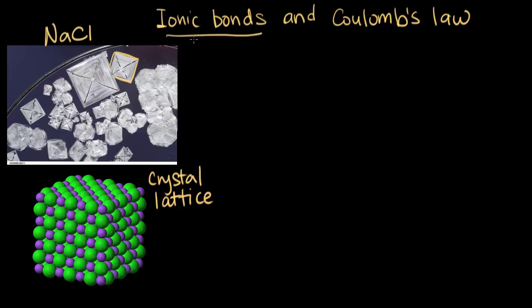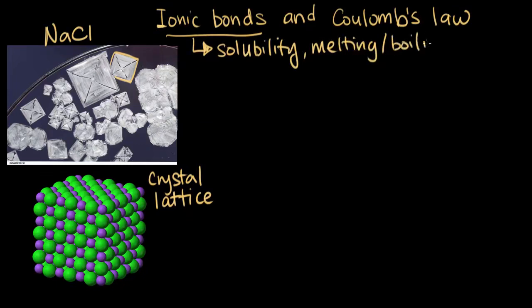These ionic bonds and how the ions are arranged tell us a lot about the solubility of the compound, and other properties like melting or boiling points. And it can even be related back to things like how hard a particular ionic solid is.